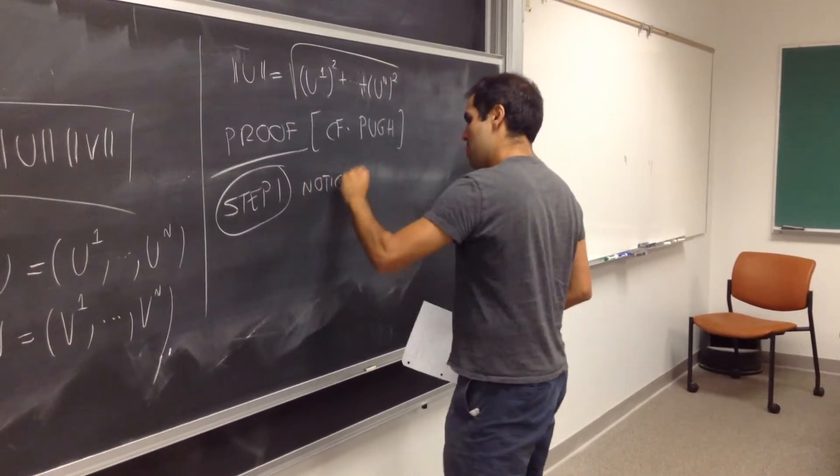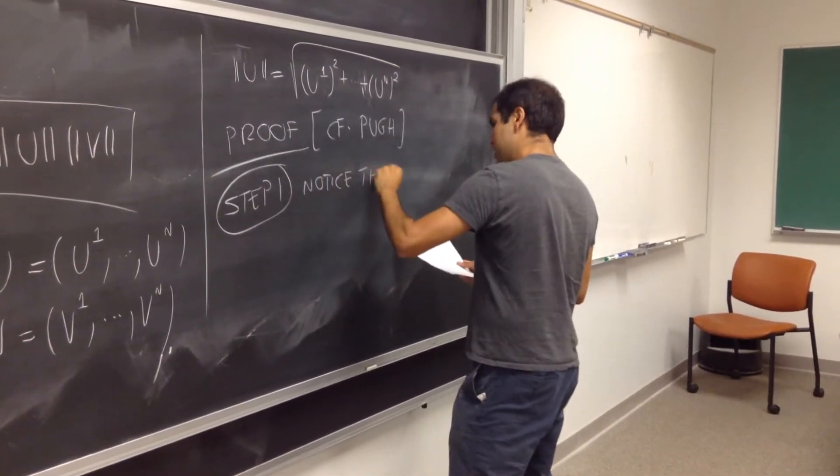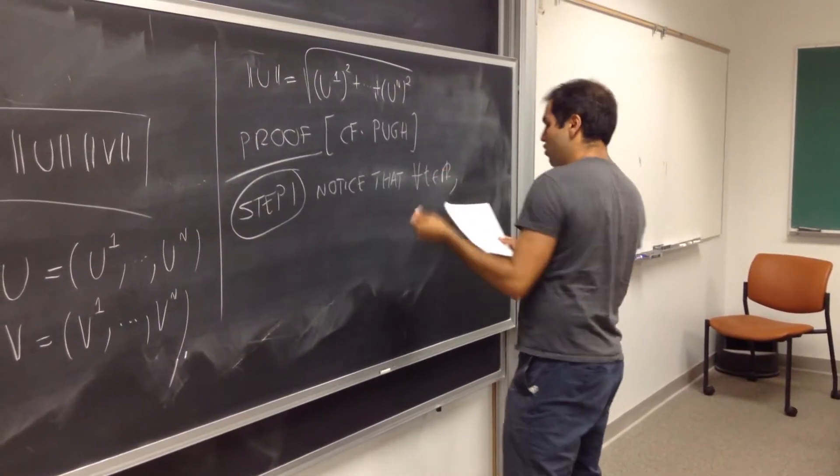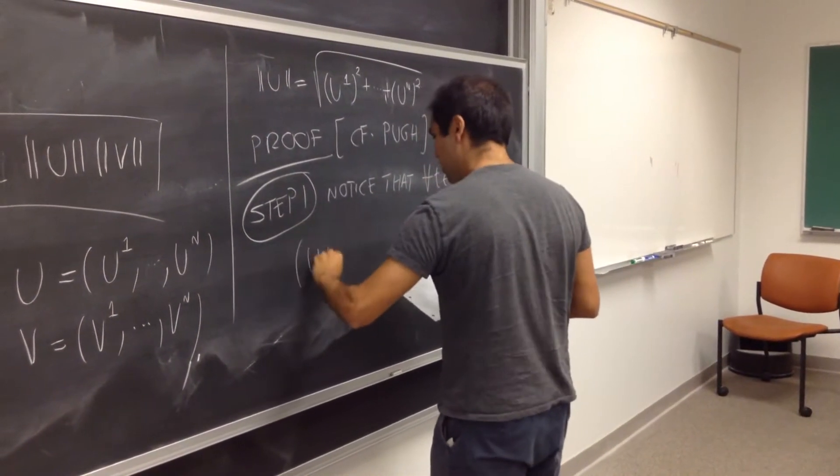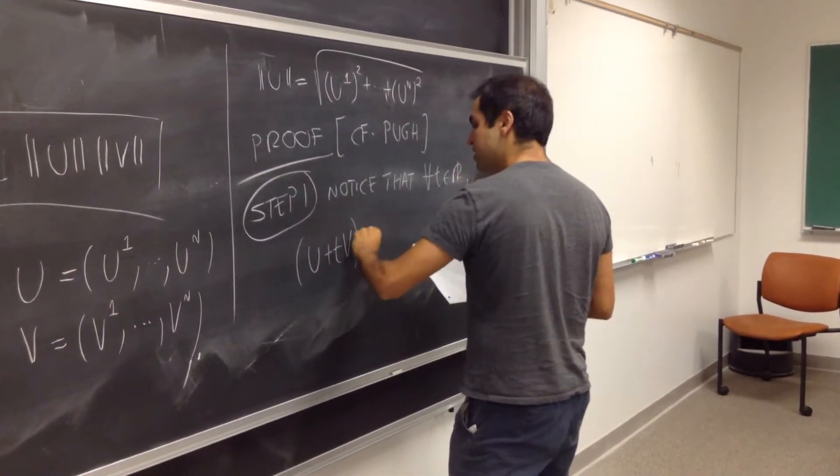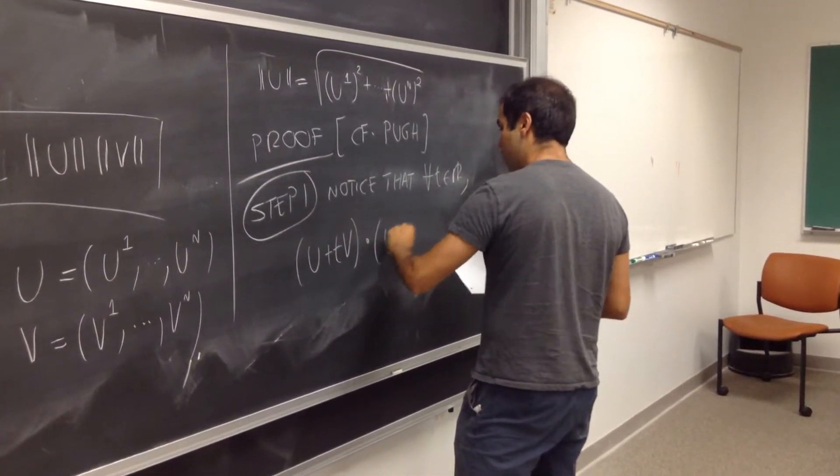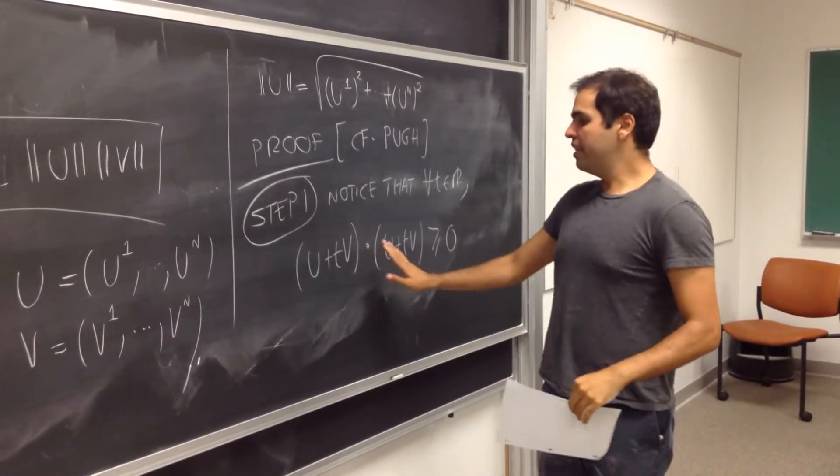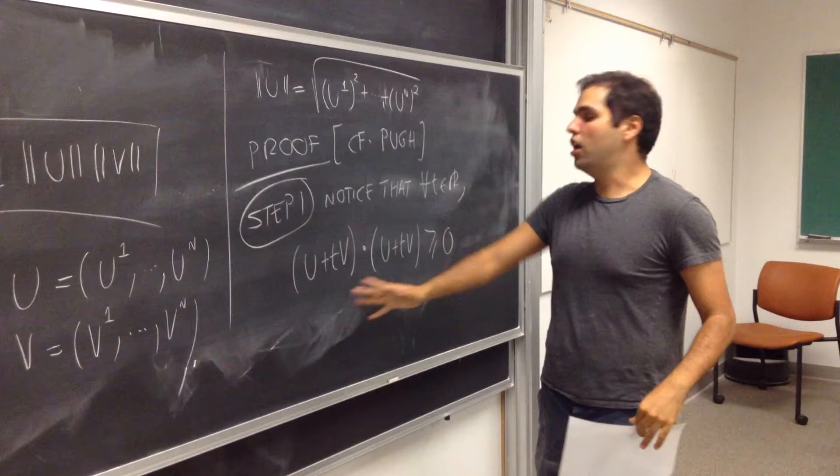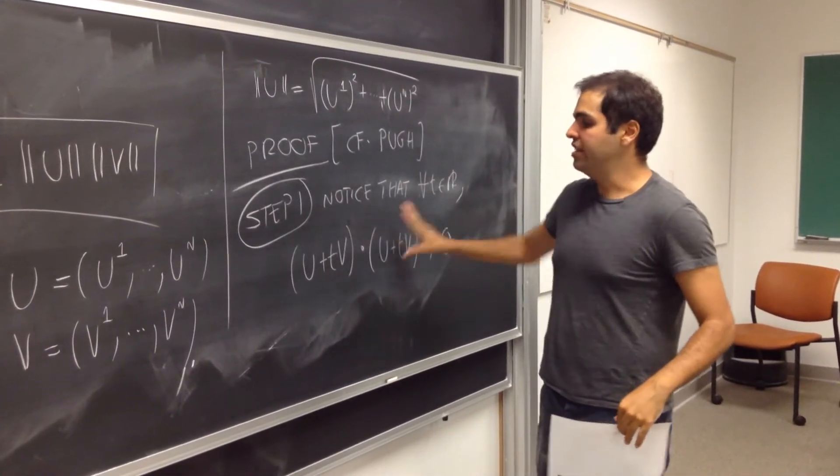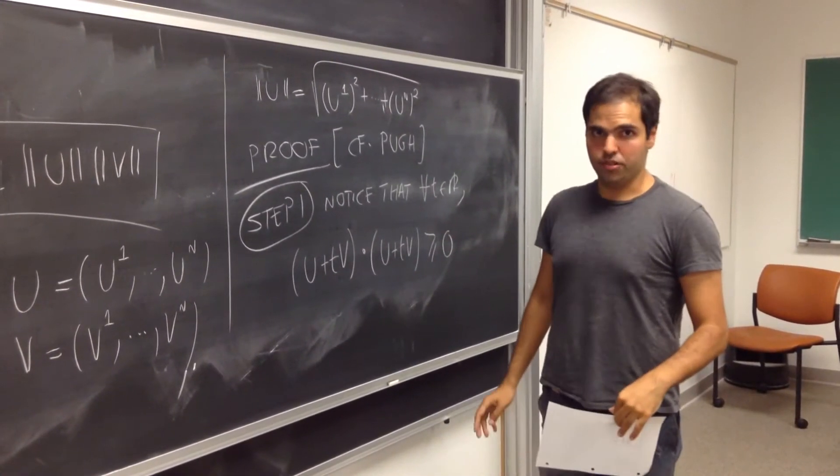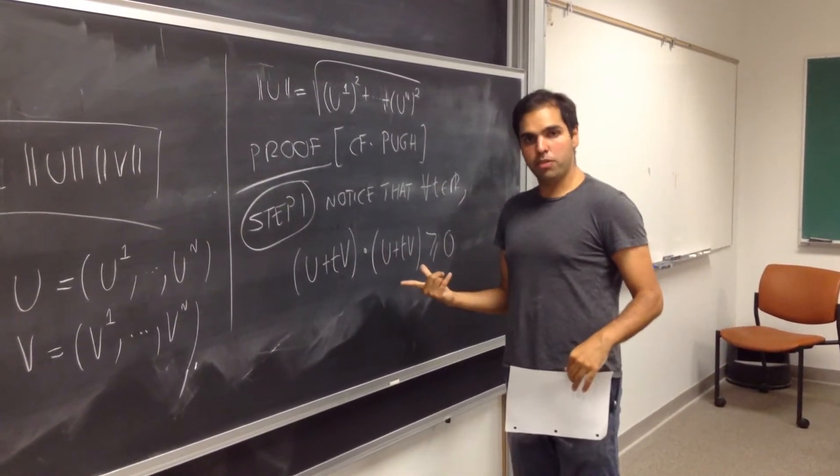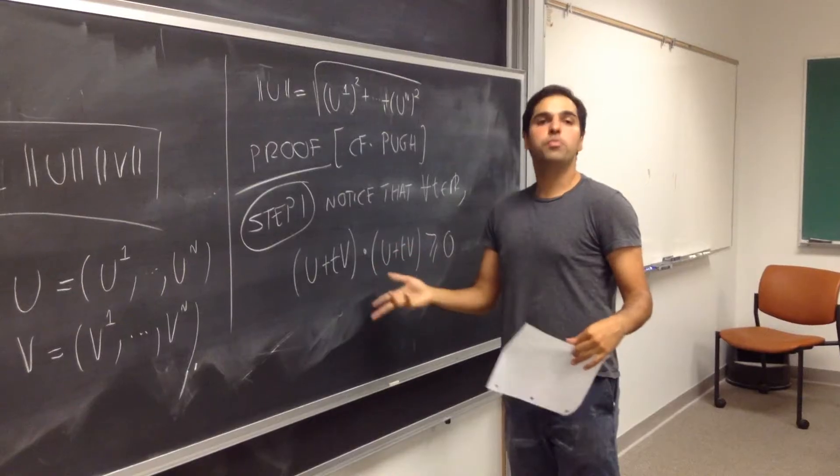So step one is just based on this clever observation. Notice that, no matter which real number t you have, the following dot product is always positive. If you take u plus tv and dotted with itself, it's always greater than or equal to zero. And that's one of the properties of the dot product, that if you have a vector and you dotted with itself, it's always greater or equal to zero. But that's great. That's a very complicated expression, and it's just waiting to be foiled out.